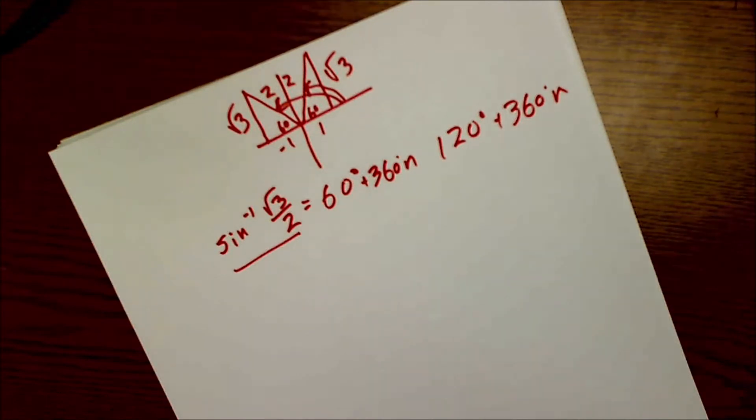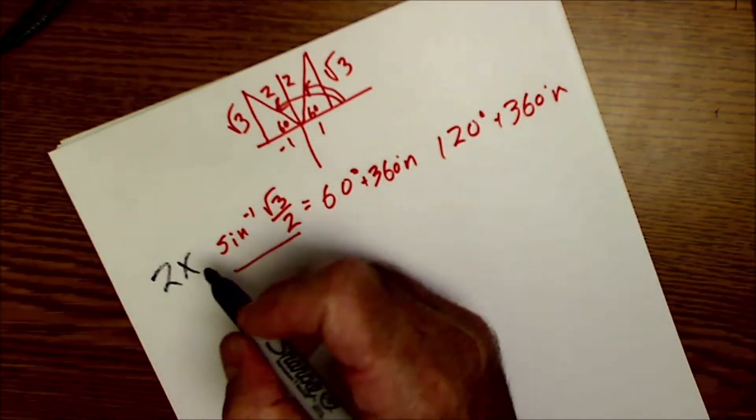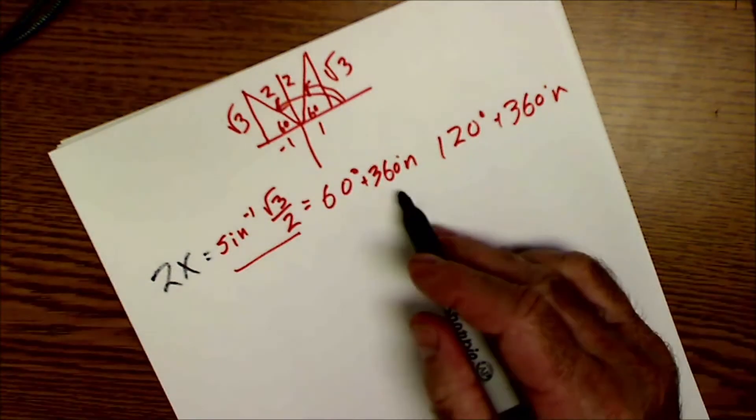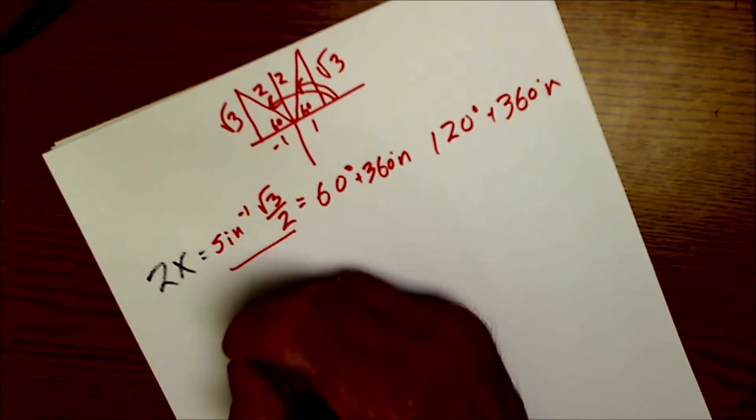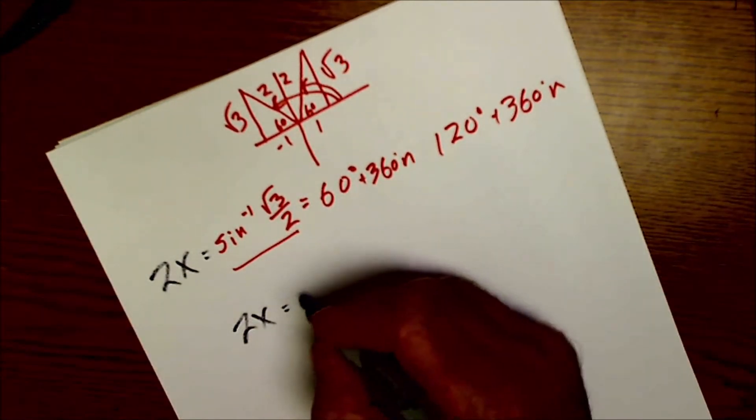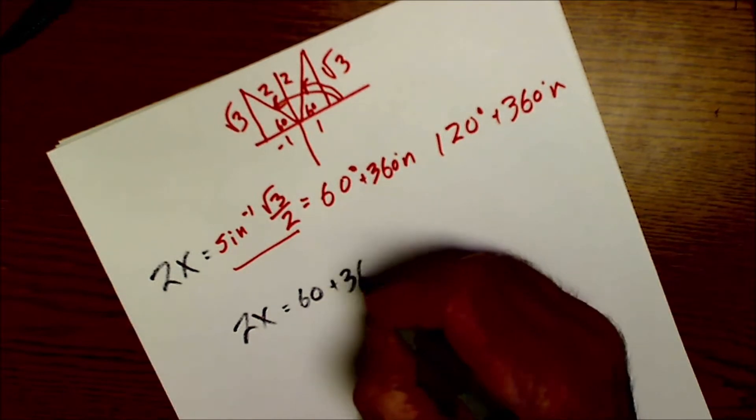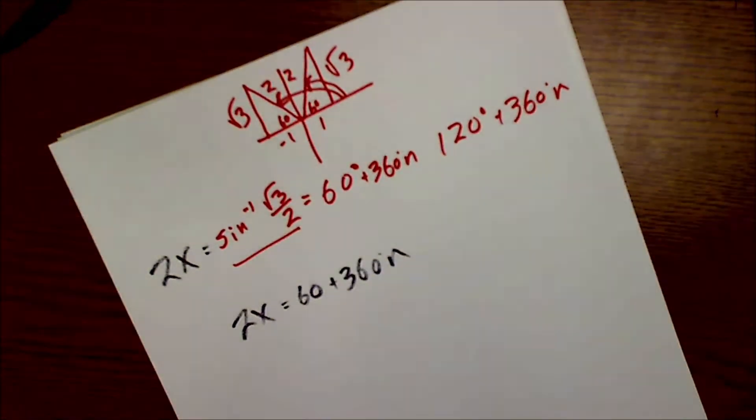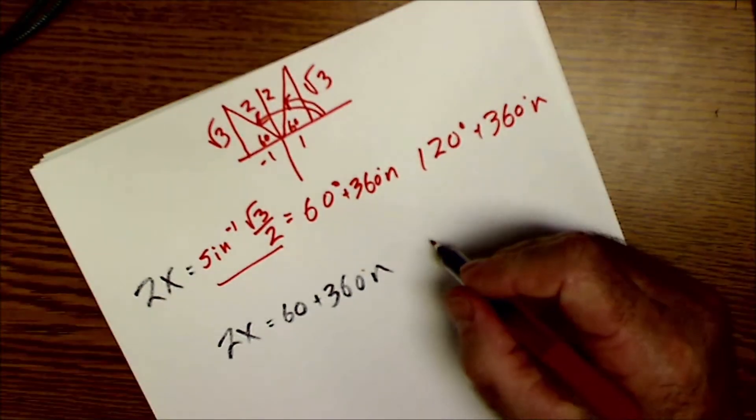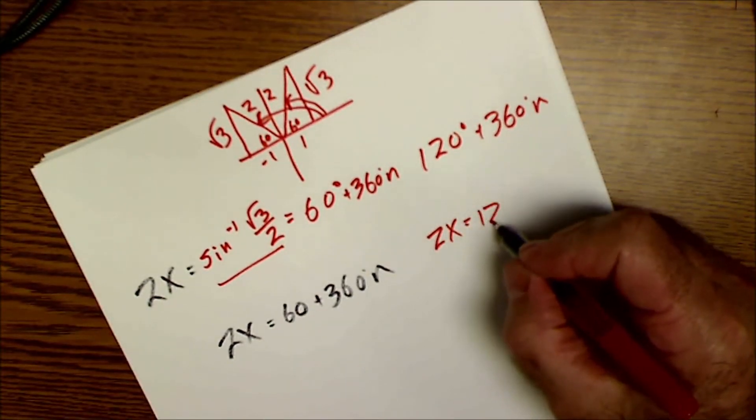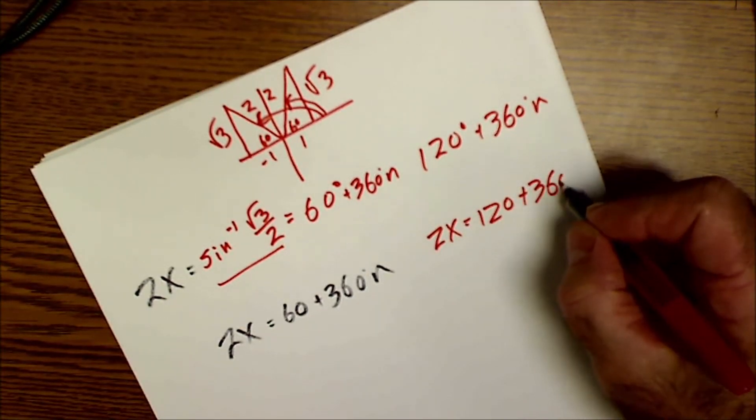And remember 2x was equal to this. So 2x is equal to 60 plus 360 N, or 2x is equal to 120 plus 360 N.